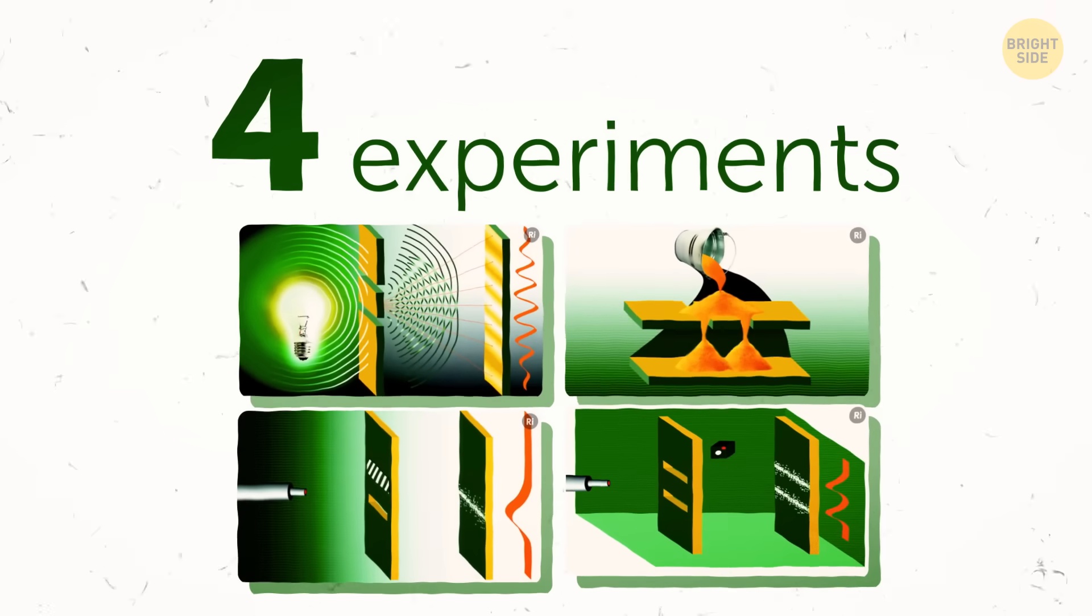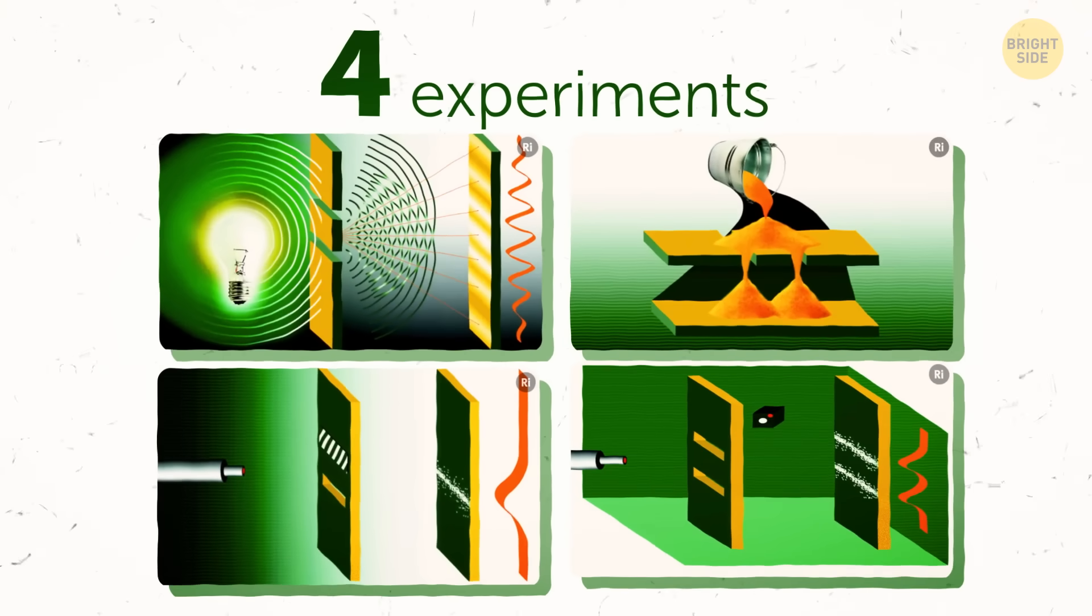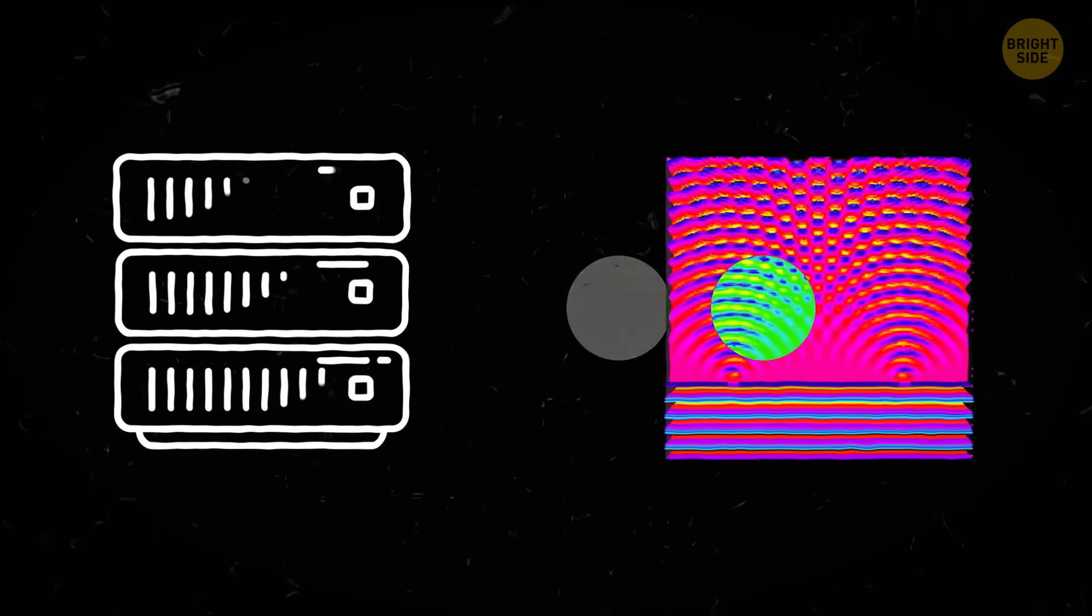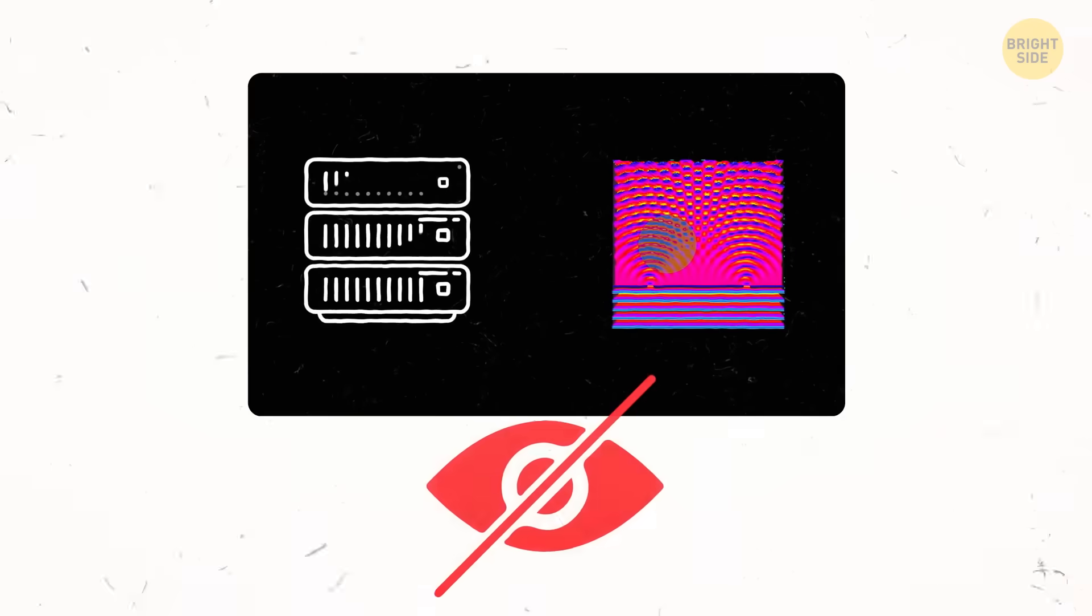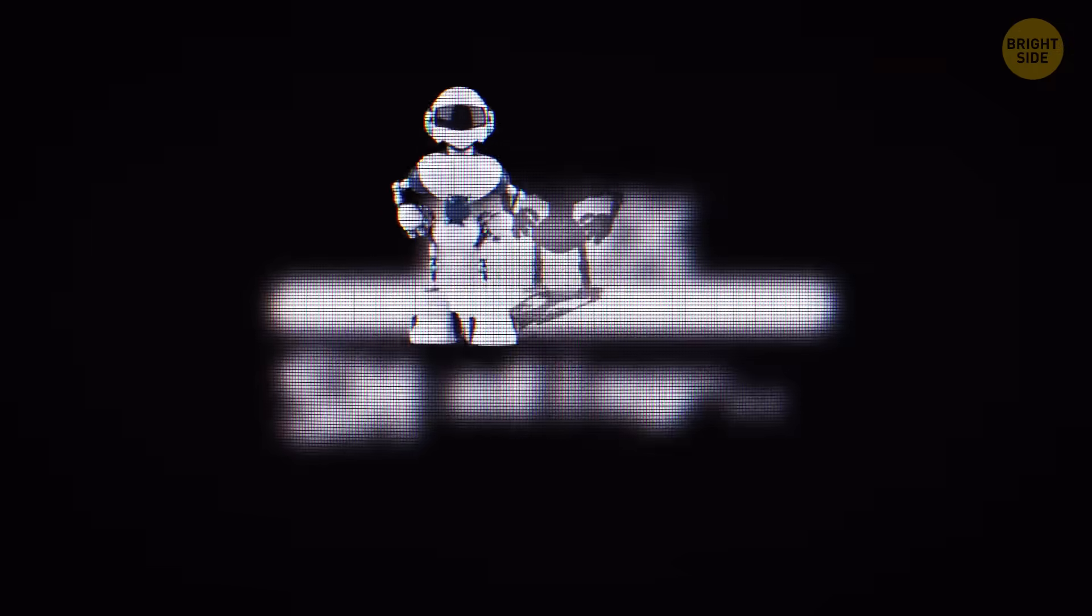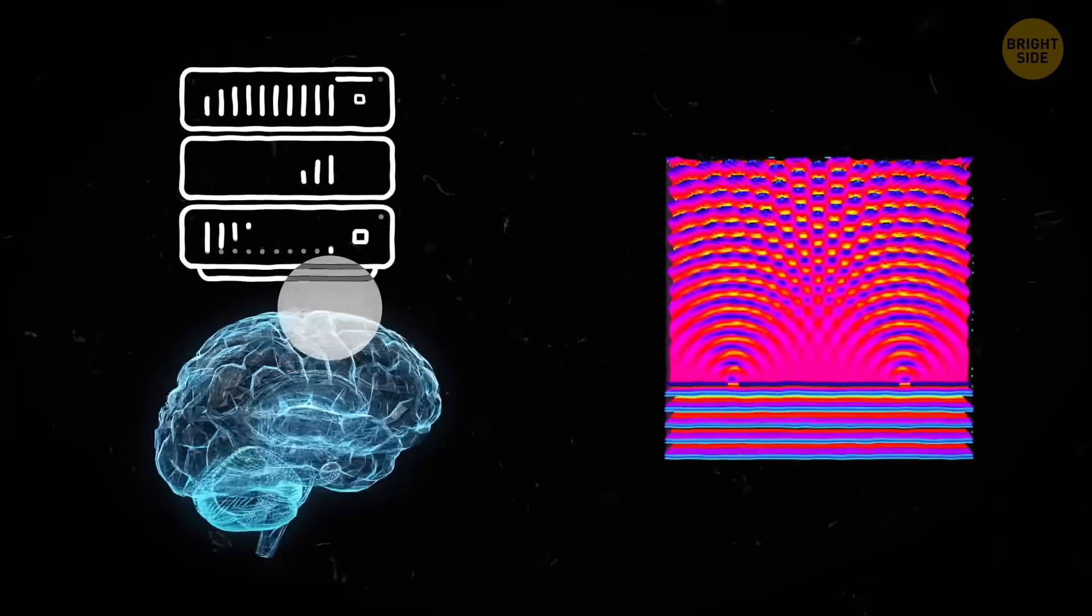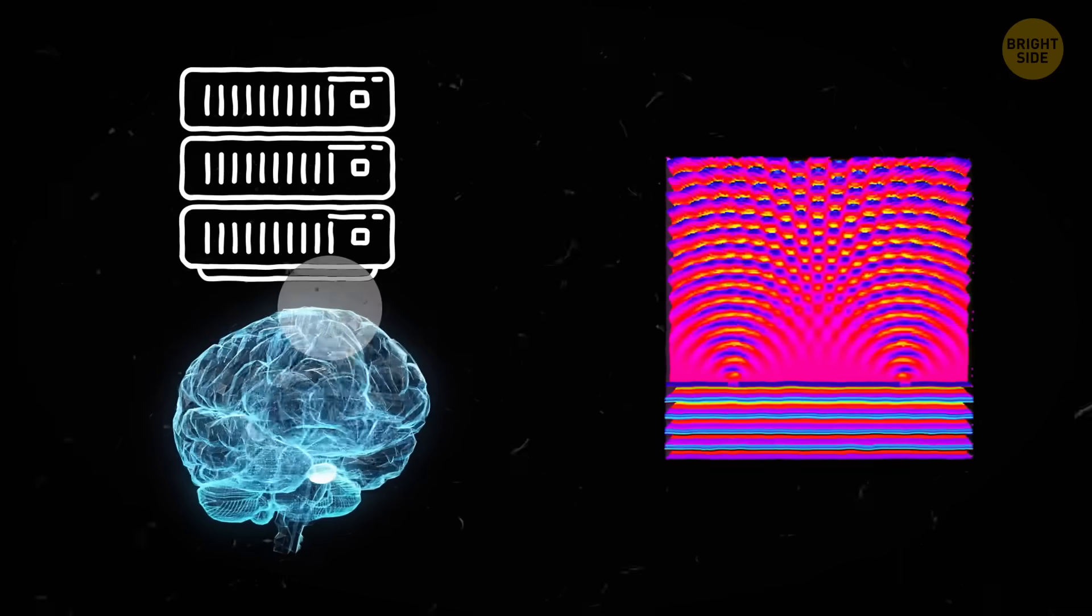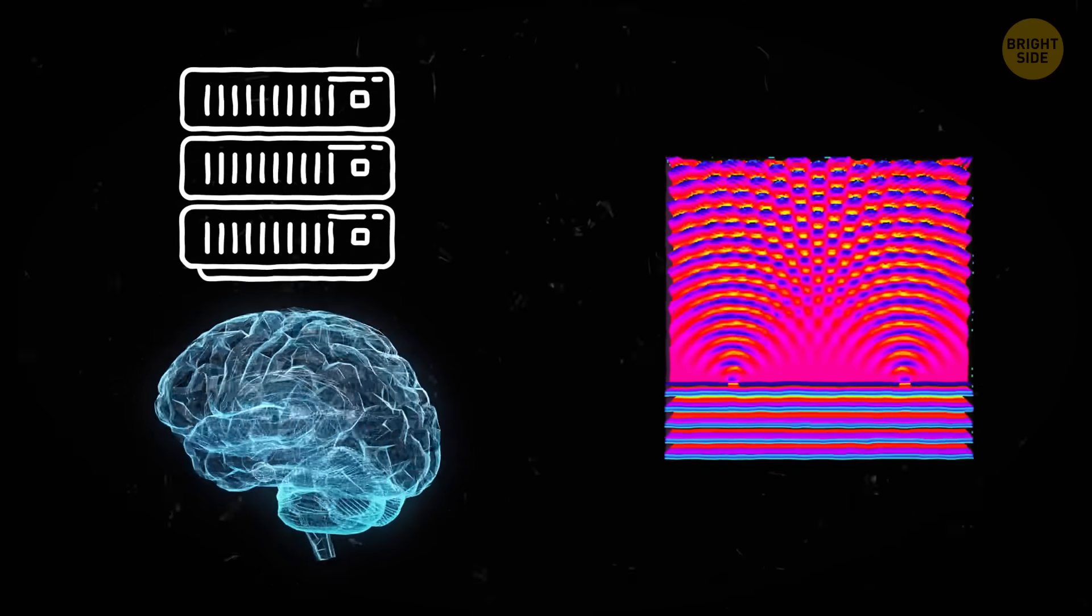There are four experiments in total. Each one is basically a version of the double-slit experiment. They test how and when exactly our reality is rendered. The first one checks what happens when a machine detects the data, but no one looks at it. In a video game, details should load up only when someone is observing them. So they want to see if particles change their behavior when an actual human is looking at them, or when the machine detects them.